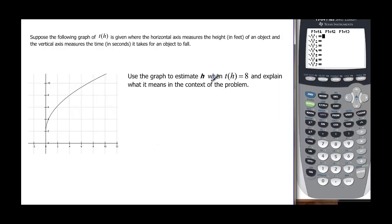And finally, estimate h when T(h) is equal to 8. So this is going to be our time. We know this is 8 seconds, because we want to find the height. So we look at 8 on our graph, and we go across, and it looks like it's this point right here, which is right above the 4, so h is equal to 4, which means that it takes an object 8 seconds to fall 4 feet.